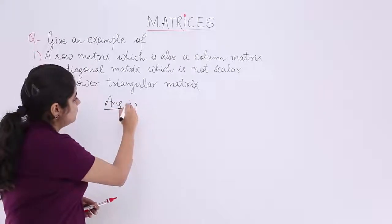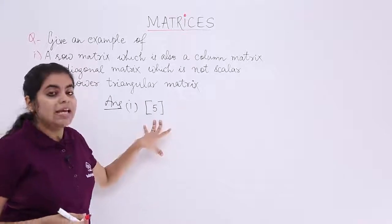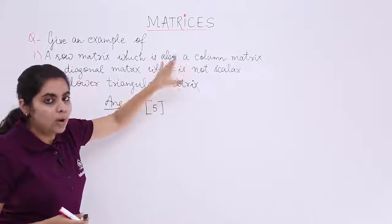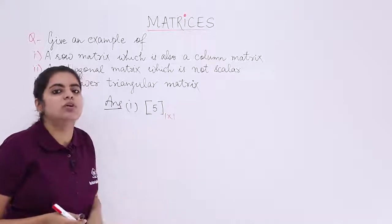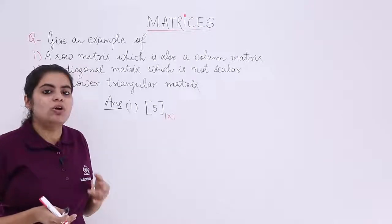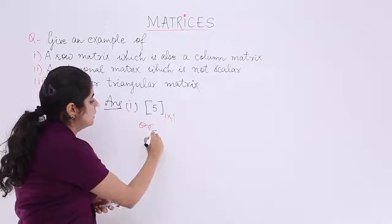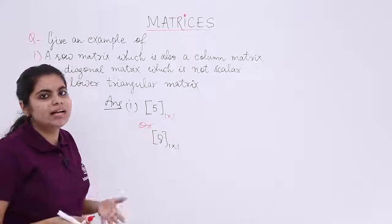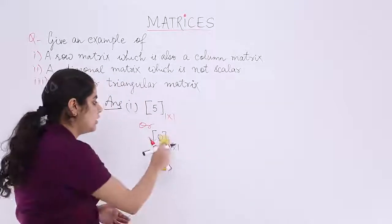The answer to the first part: suppose I quote the element 5 placed in a matrix. This matrix has one row and one column, meaning its order is 1×1. Only then is it possible to have one row and one column. Any example you quote should have order 1×1 — it can be 5, 8, 10, 9, or any element of that sort. The first part is as simple as that.